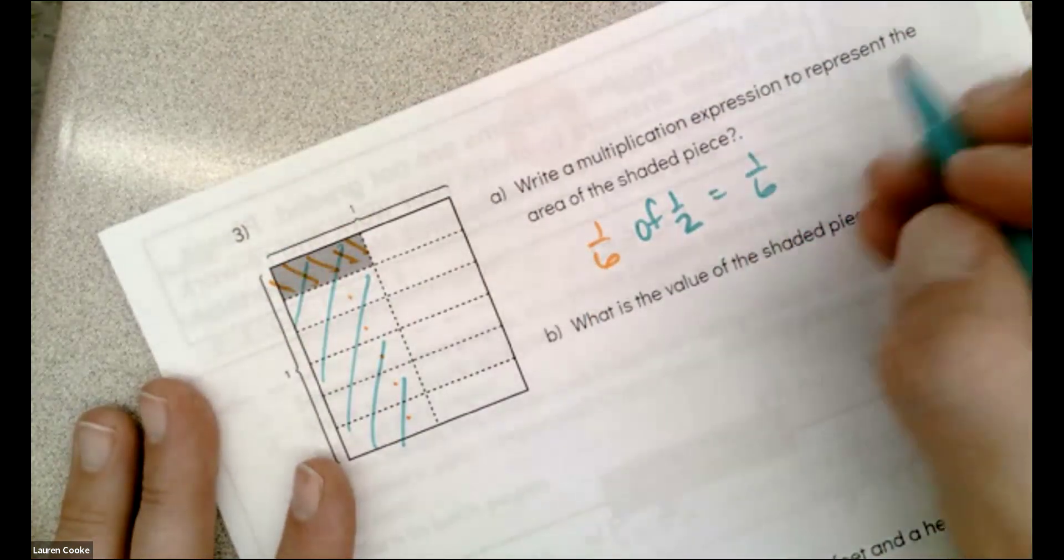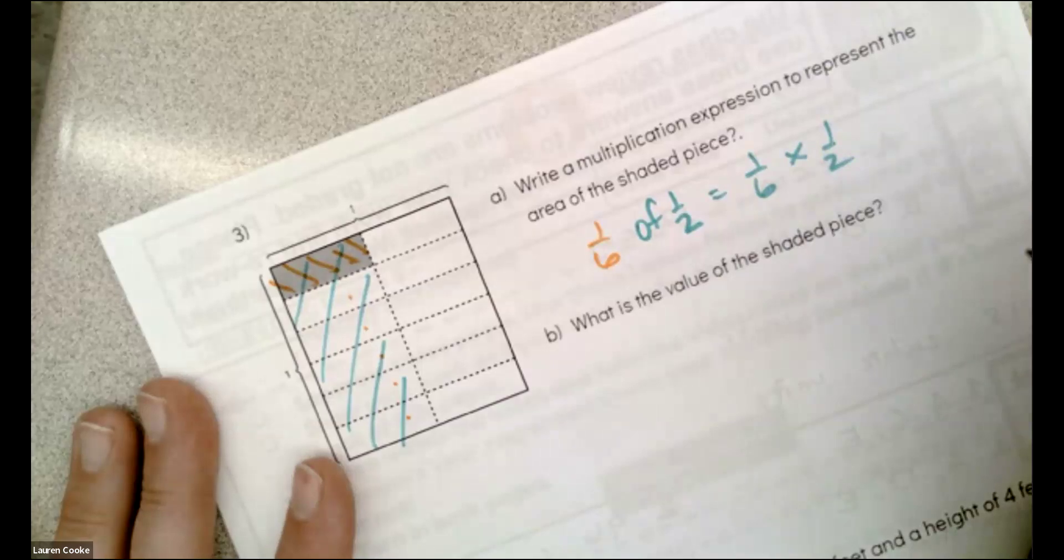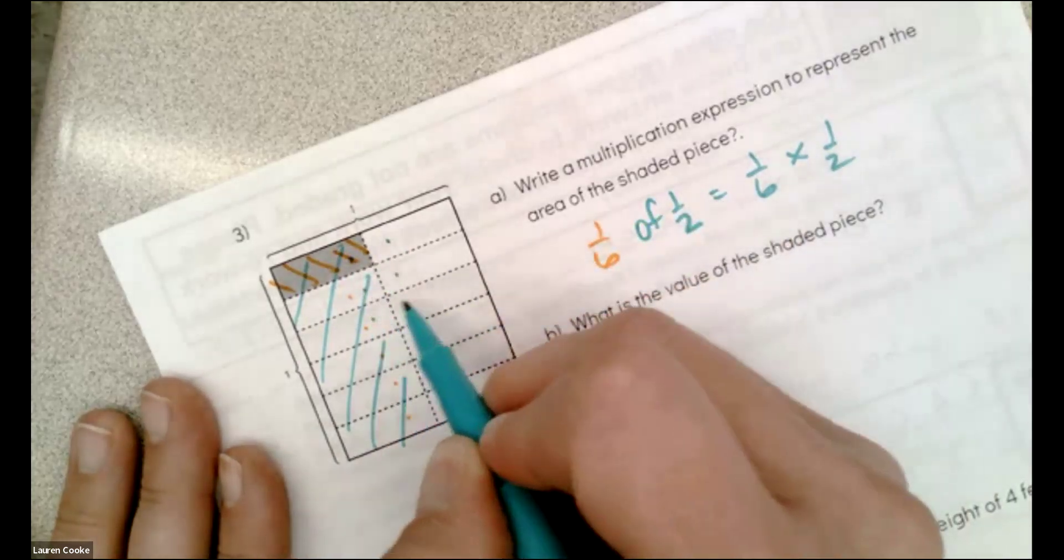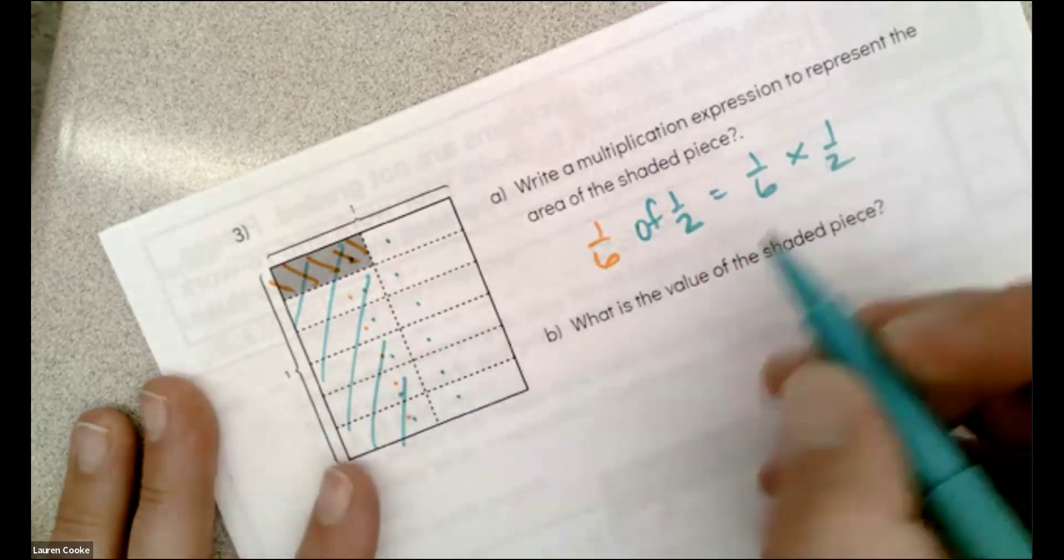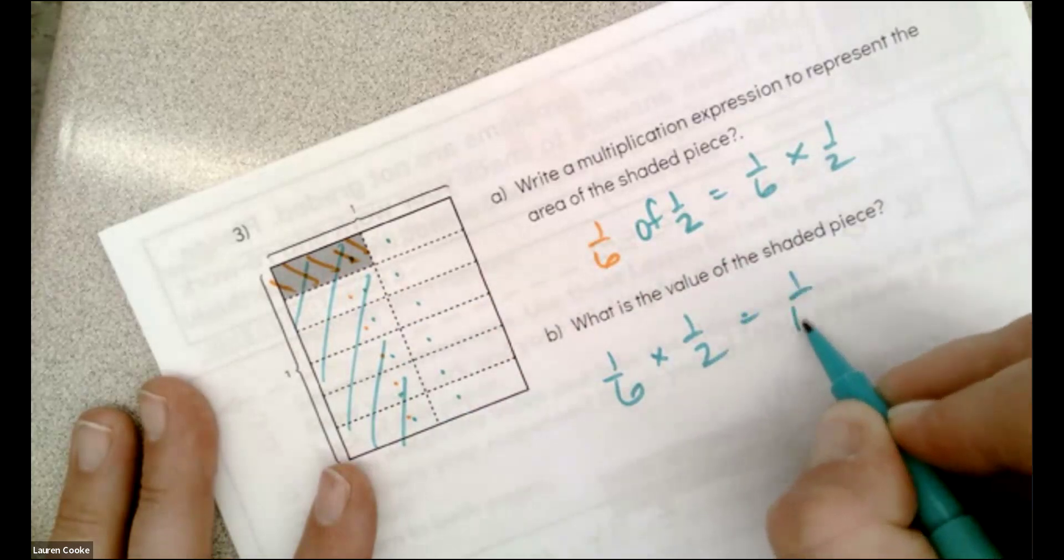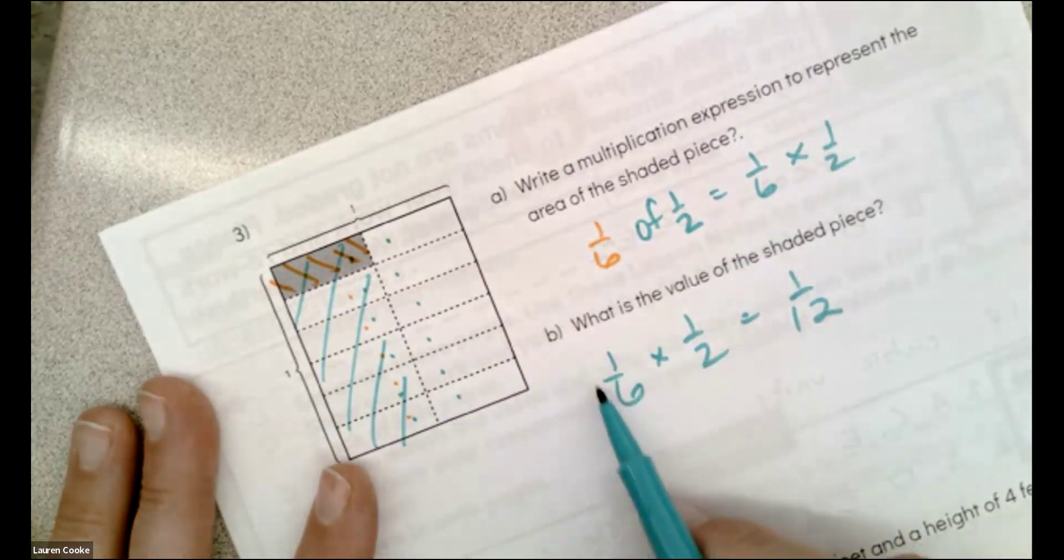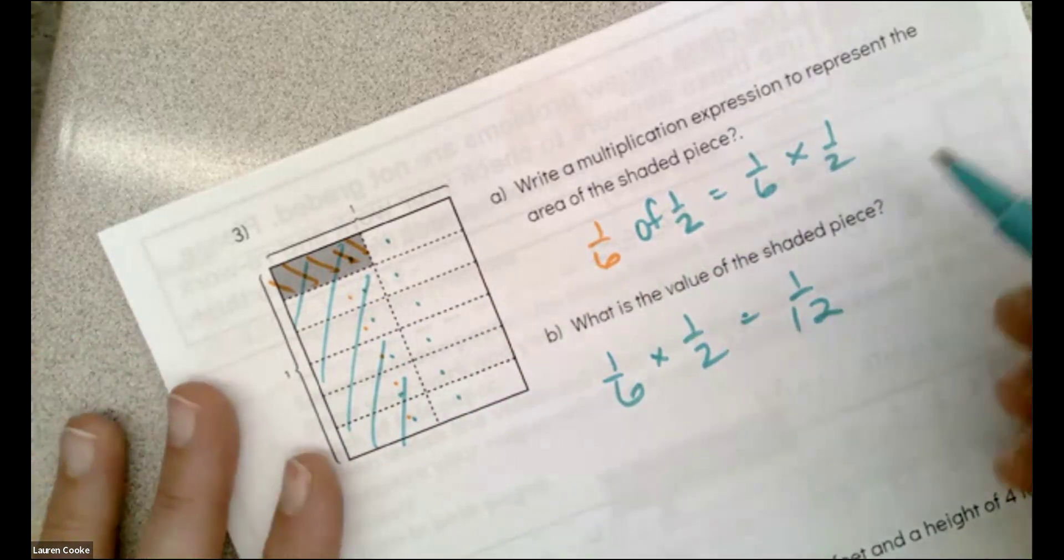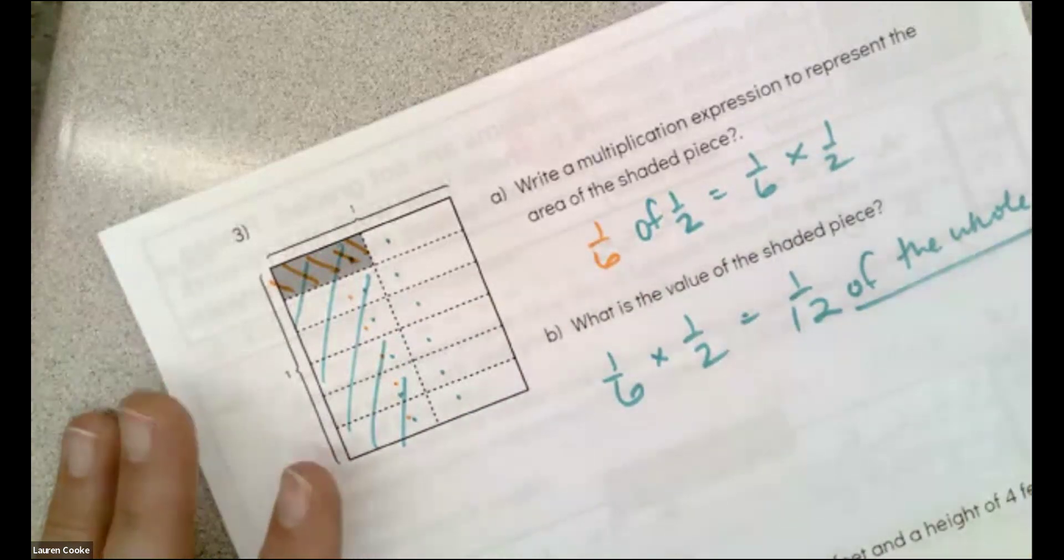And it looks like one-sixth of one-half is one-sixth times one-half. And that's going to be one, two, three, four, five, six, seven, eight, nine, ten, eleven, twelve. That's going to be one-twelfth. Do you see what's happening here? I'm multiplying the numerators and the denominators in the same way that I've been using multiplication with whole numbers, right? And the number had a denominator of one. This is of the whole.